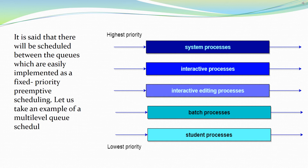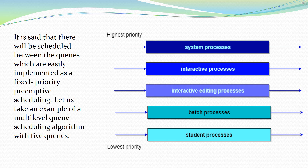Let us take an example of a multi-level queue scheduling algorithm with five queues: system processes, interactive processes, interactive editing processes, batch processes, and student processes. Each queue has absolute priority over lower priority queues. No process in the batch queue, for example, could run unless the queues for system processes, interactive processes, and interactive editing processes were all empty. If an interactive editing process entered the ready queue while a batch process was running, the batch process will be pre-empted.